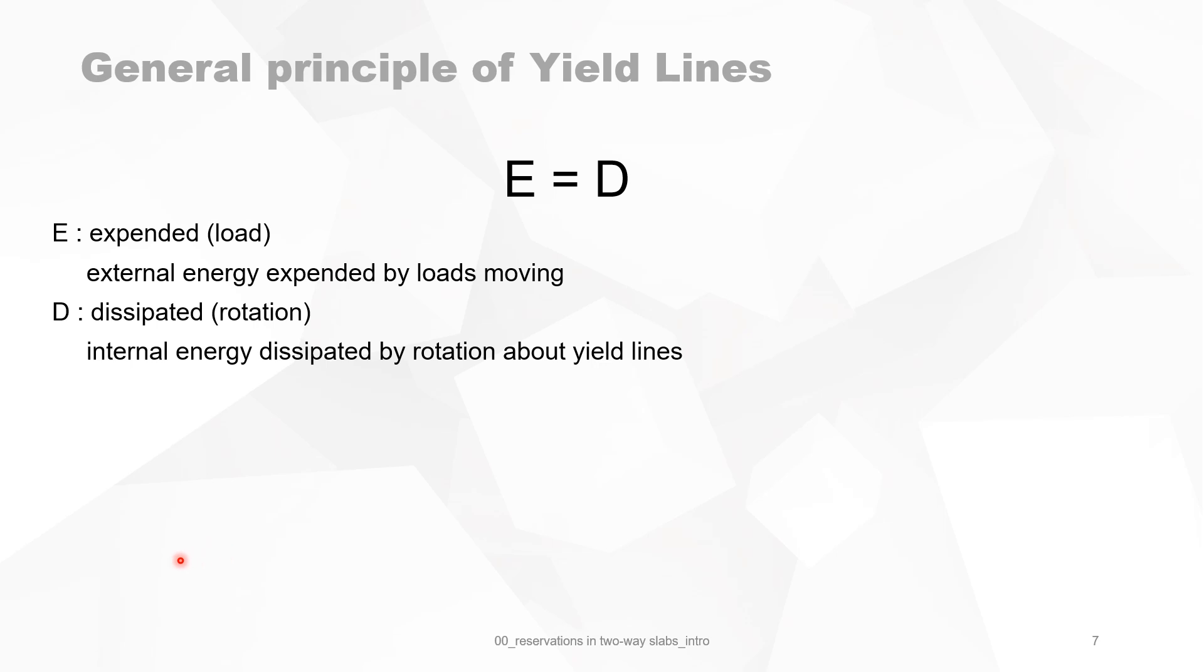The general principle is that the external energy expended by the loads moving is equal to the internal energy dissipated by rotation about the yield lines. You can put it in a simple formula: the sum of the loads with their displacements must be equal to the sum of the bending moments alongside the yield lines projected to the rotation axis L, times the rotation angle.